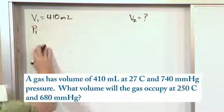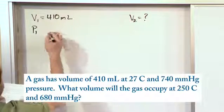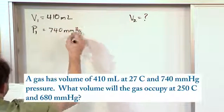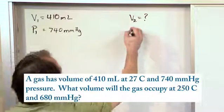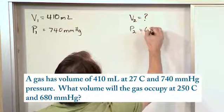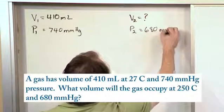The initial pressure, P1, is given to us as 740 millimeters of mercury. All right, and the final pressure that we move to, if you read the problem, it says the final pressure is 680 millimeters of mercury.